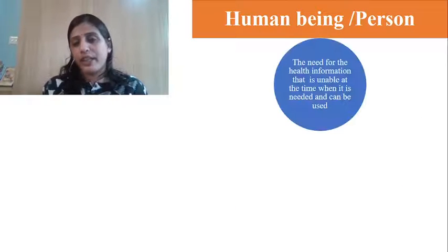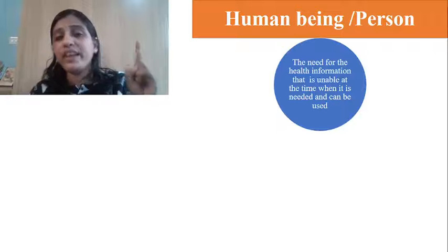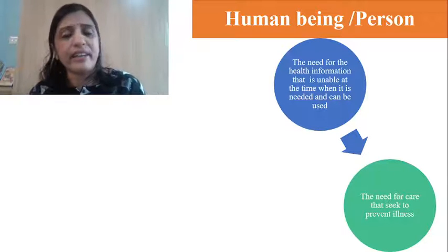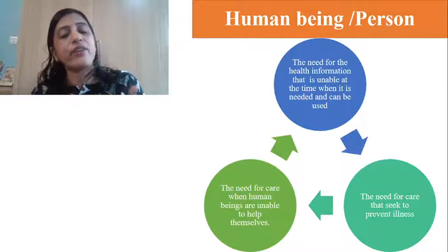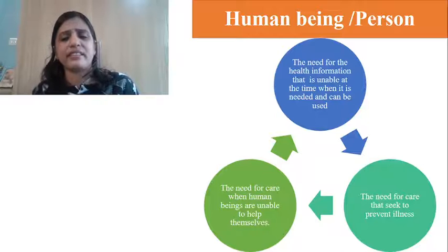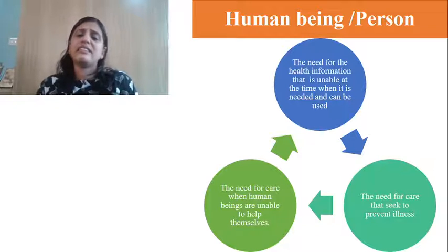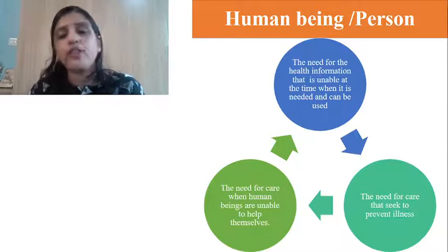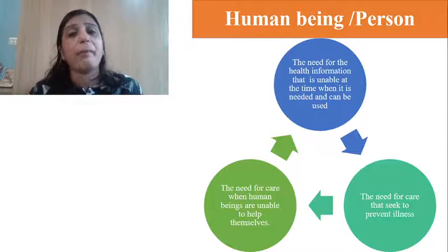King believed there are three fundamental needs for any human being: first, the need for health information — to be provided whenever needed; second, the need for care that seeks to prevent illness — such as preventing foot drop, contractures, or complications; third, the need for care when they are unable to help themselves.